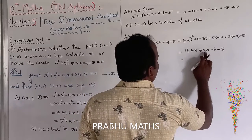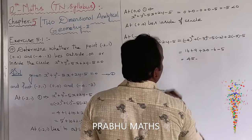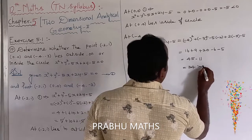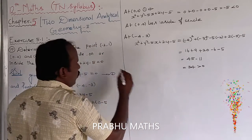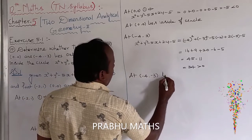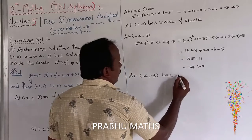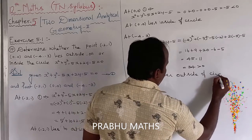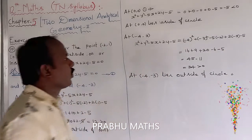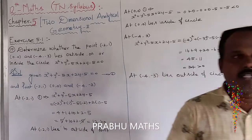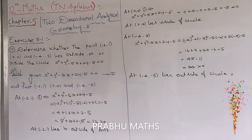So that equals 35 plus 45, giving 34. 34 is greater than 0. So at the point minus 4 comma minus 3, the point lies outside of the given circle. Summary: greater than 0 means outside, less than 0 means inside, equal to 0 means on the circle.